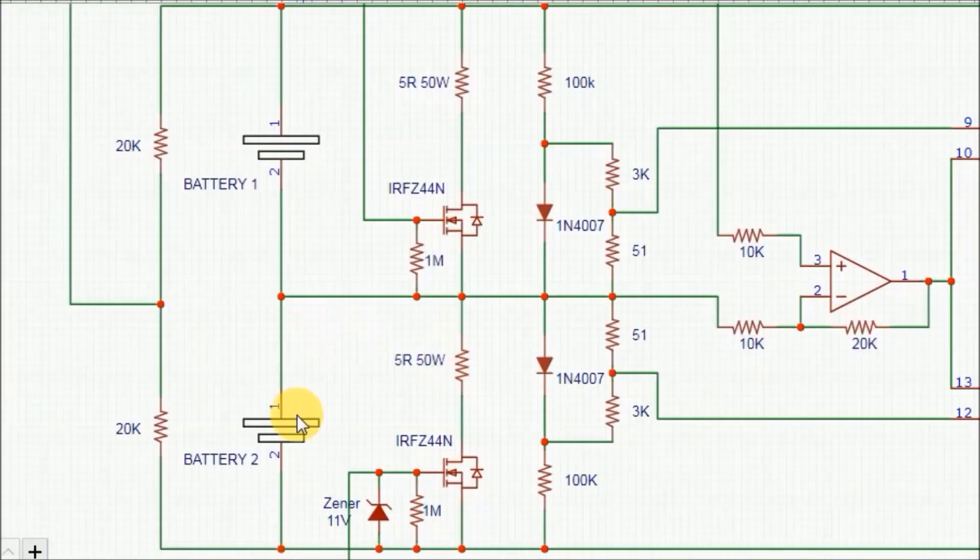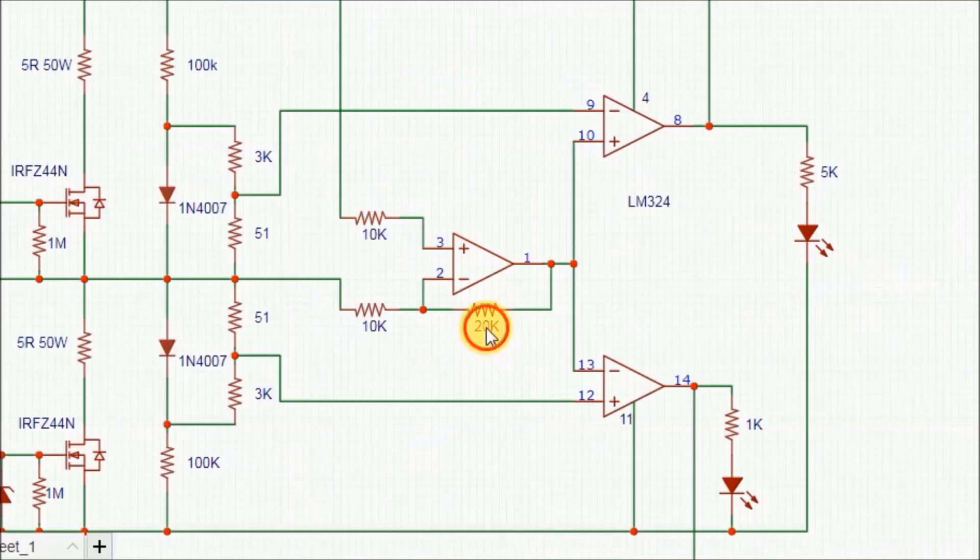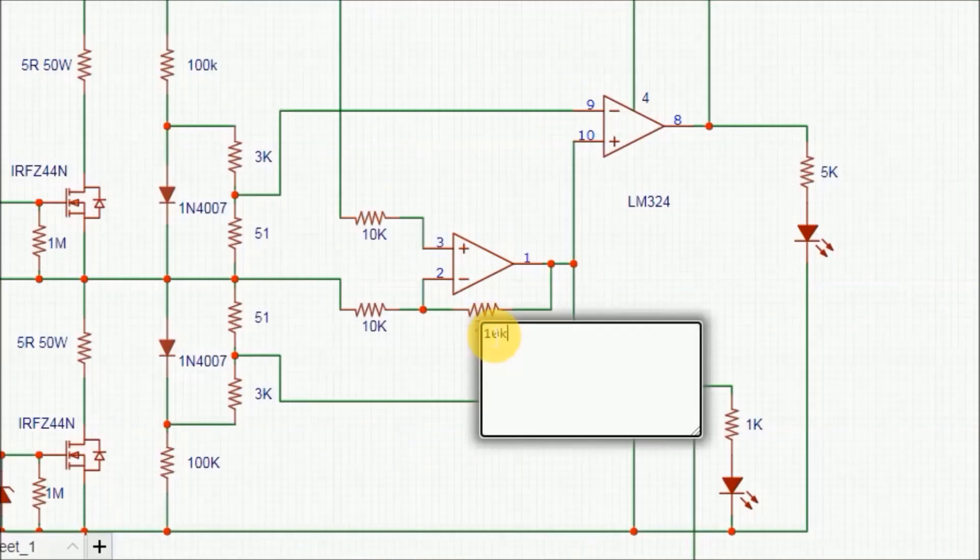The same thing happens if the voltage of the second battery was higher. You can use unity gain for this differential amplifier.